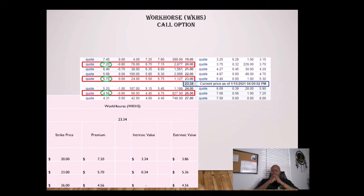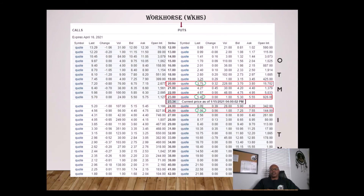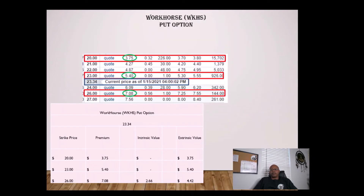That's on the call side. Now let's look at the same example but focus on the put side. On the put side, let's concentrate on the same three strike prices — $20, $23, and $26 — with the current price still at $23.34.